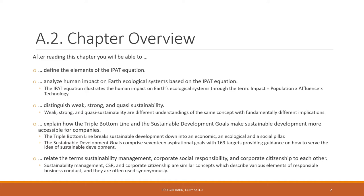This makes it a bit more accessible for companies. These three pillars are sometimes also termed people, planet, and profit — people for social, planet for ecological, and profit for the economic pillar. An even more fine-grained approach is the sustainable development goals, which comprise 17 goals with a total of 169 targets that aim to provide guidance on how to serve the idea of sustainable development. They were developed by the United Nations.